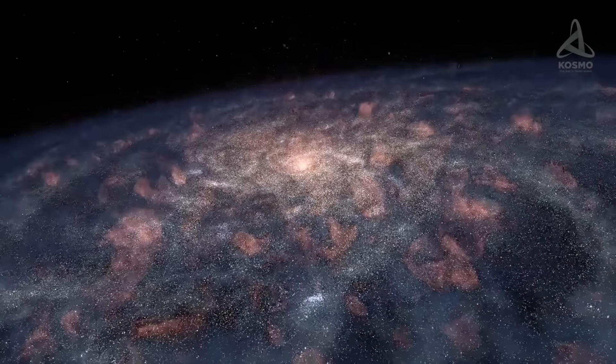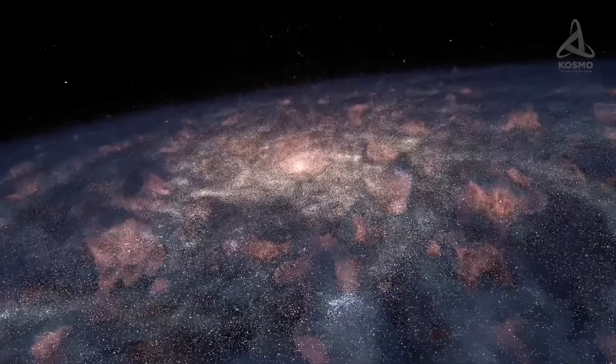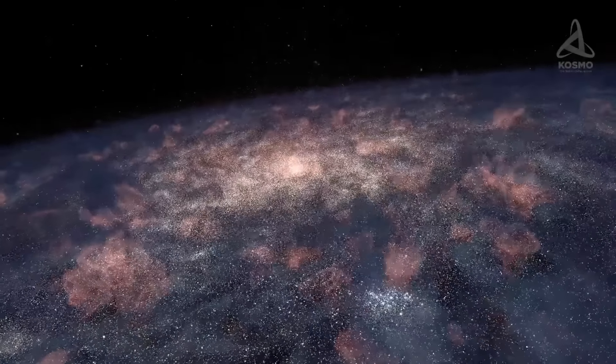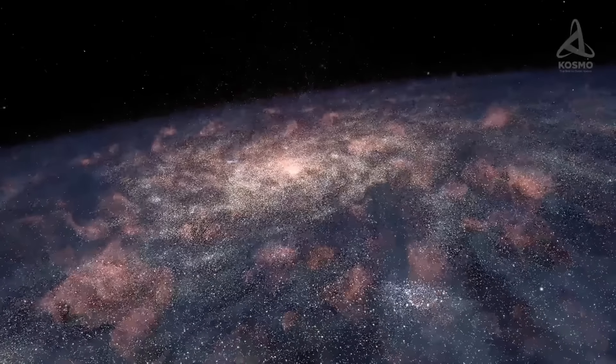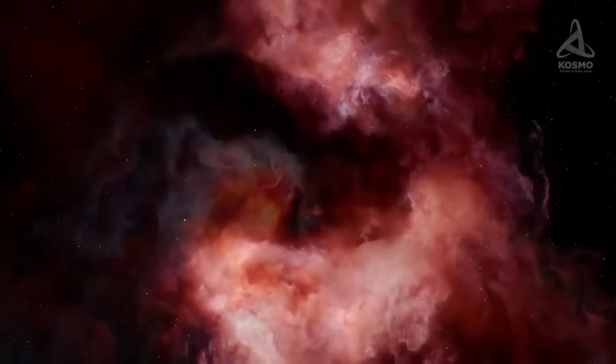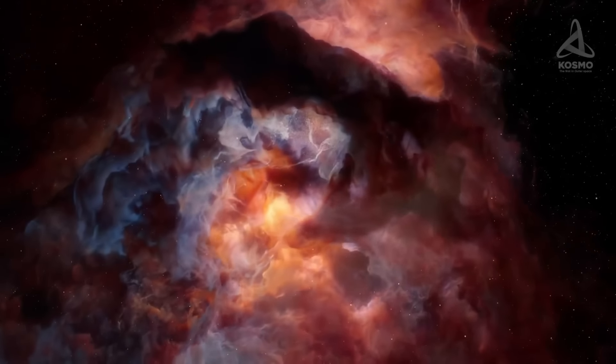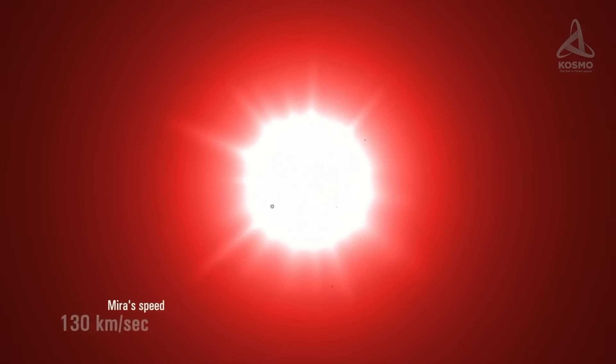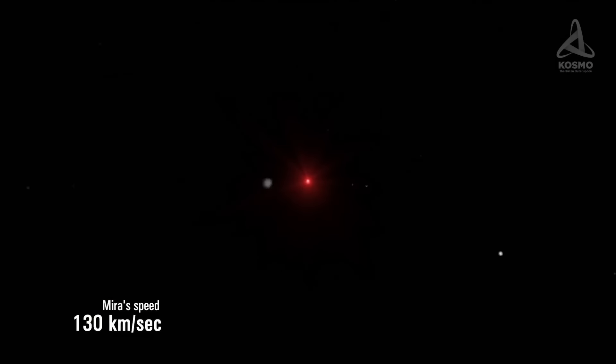Most stars in the Milky Way slowly revolve around the center of the galaxy at approximately the same speed as interstellar gas. But Mira really stands out in this respect, as it whizzes through gas in interstellar space at a speed of 130 km per second.